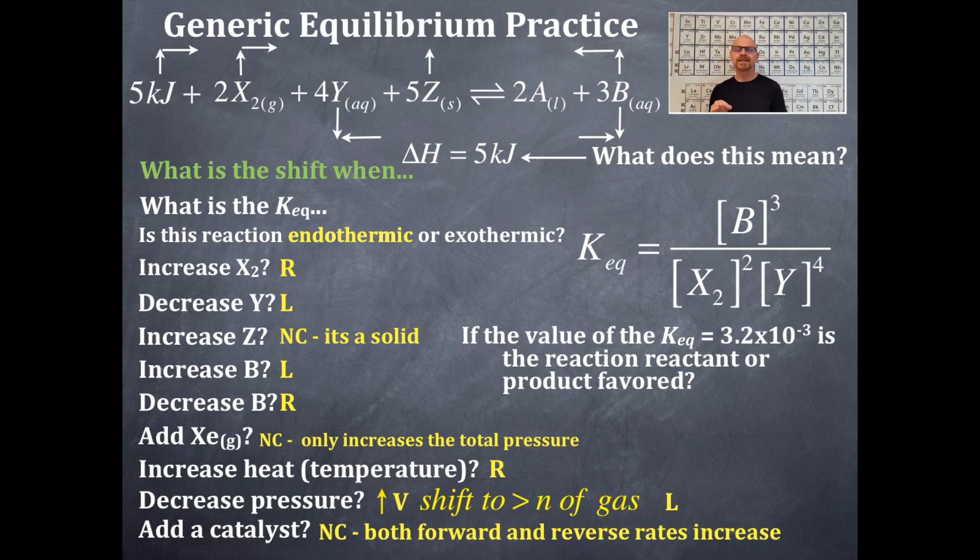And then let's pretend that we plugged in some values here for these numbers in the KEQ expression, and we obtained the number of the KEQ as 3.2 times 10 to the negative three. From this value, is this reactant or product favored? The question is, is it greater than one, less than one, or equal to one? If it were equal to one, we're at equilibrium. But if the KEQ is less than one, then we know that it is reactant favored.